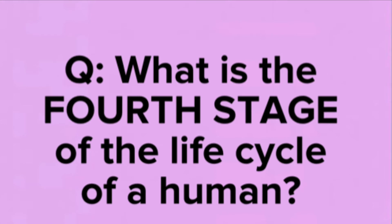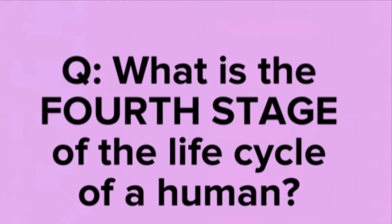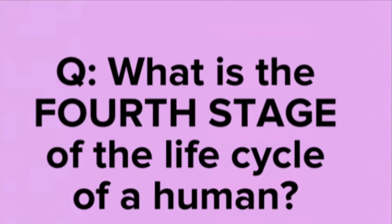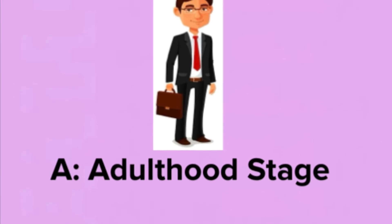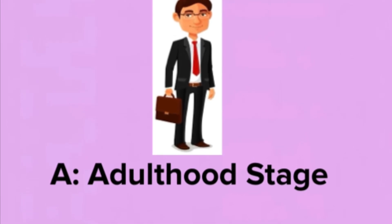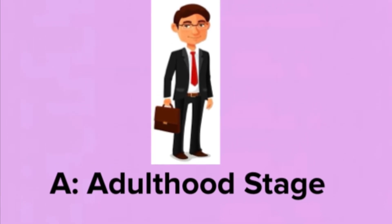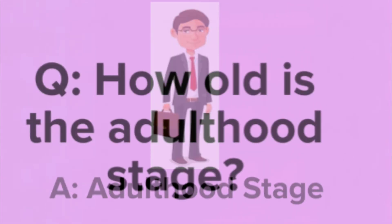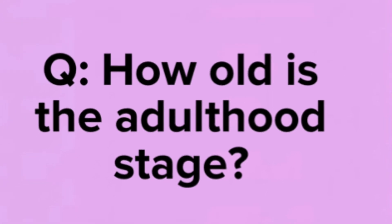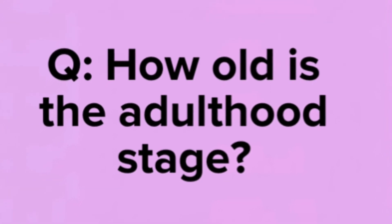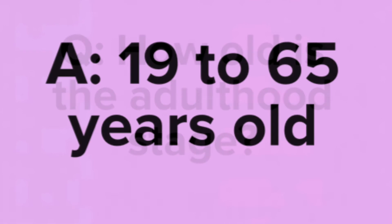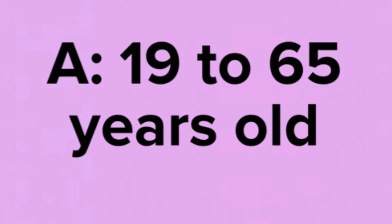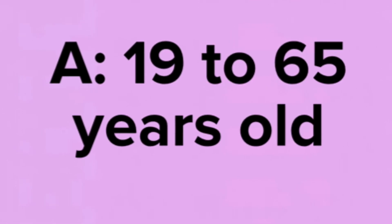What is the fourth stage of the life cycle of a human? The answer is the adulthood stage. How old is the adulthood stage? The answer is 19 to 65 years old.